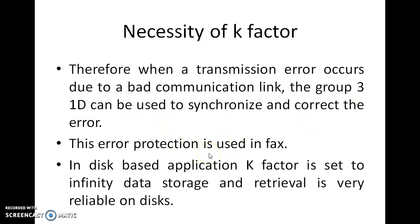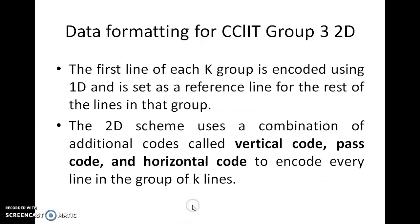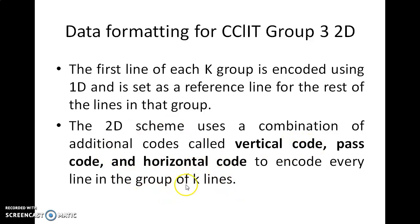This error protection is used in fax. In disk-based applications, the K factor is set to infinity because storage and retrieval is considered reliable on disks. For data formatting, the first line of each K group is encoded using 1D and is set as the reference line for the rest of the lines in the group. The 2D scheme uses a combination of additional codes — vertical code, pass code, and horizontal code — to encode every line in the group of K lines.